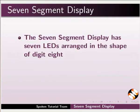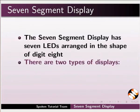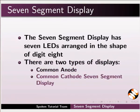The 7-segment display has 7 LEDs arranged in the shape of the digit 8. There are two types of displays: common anode and common cathode 7-segment display.